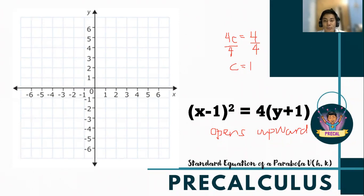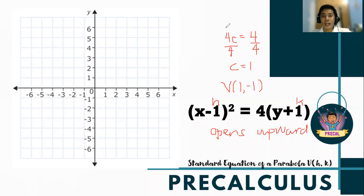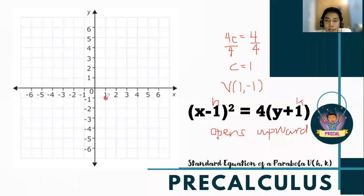Following the formula, we can identify the vertex. Notice that x is always with h and y is always with k. Using the same pattern as in determining the equation of the circle, we invert the sign. So if you see negative 1 in the formula, the vertex is at positive 1 — that is the abscissa of the vertex. For the ordinate, the opposite of positive 1 in the formula is negative 1. So the vertex is at (1, -1).